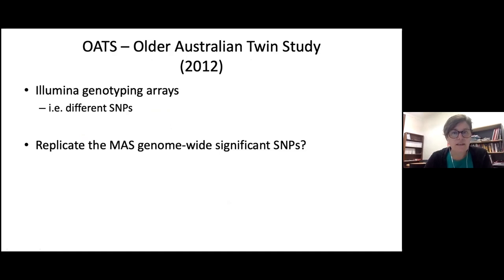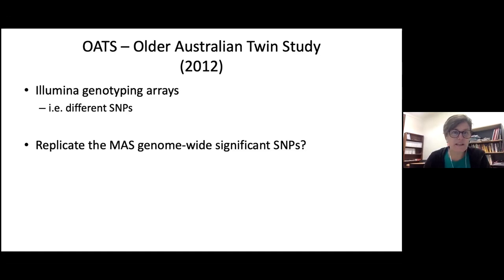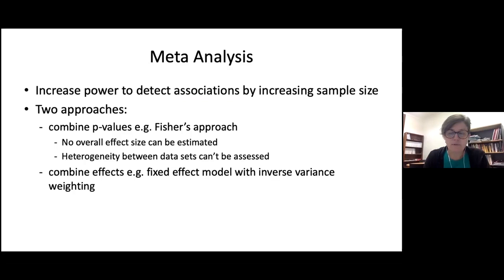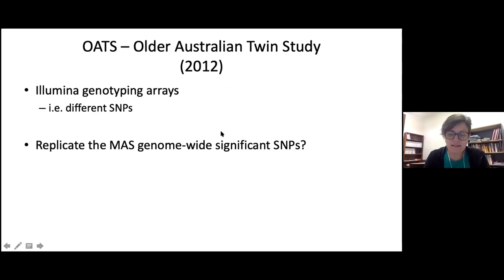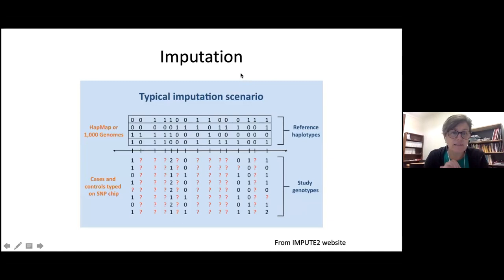In 2012, we didn't find anything in MAS alone because 1,000 people is not a large sample size in genomics. We then looked at the older Australian Twin Study (OATS) genotyped on Illumina arrays, which meant a different set of SNPs. We looked at using the OATS samples to replicate the MAS genome-wide significant SNPs, but we didn't replicate anything. To compare across different arrays, we looked at imputing the data.